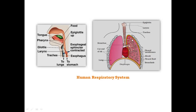The respiratory system has two functional parts. From the external nostrils to the bronchioles, this is the conducting part — it is the passage for air flow. The alveoli and alveolar ducts form the respiratory or exchange part, where diffusion of oxygen and carbon dioxide takes place.